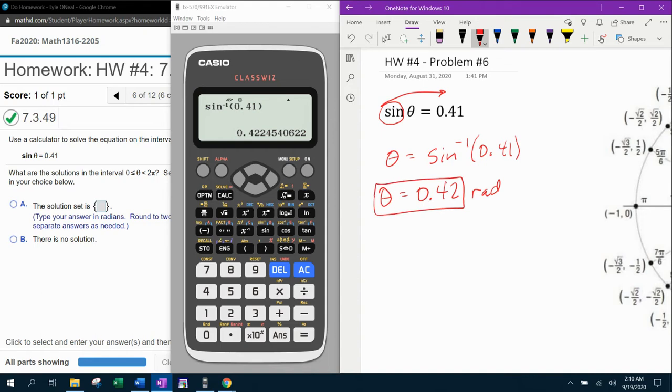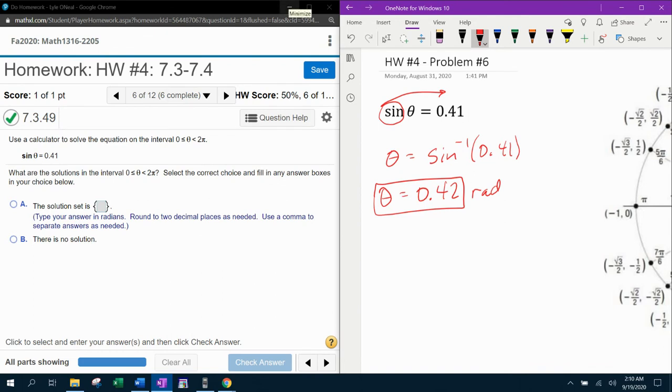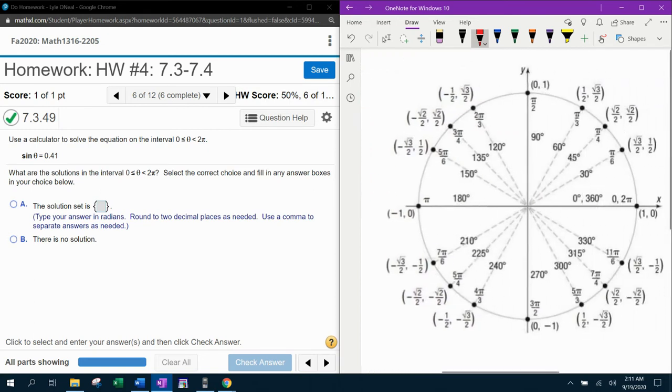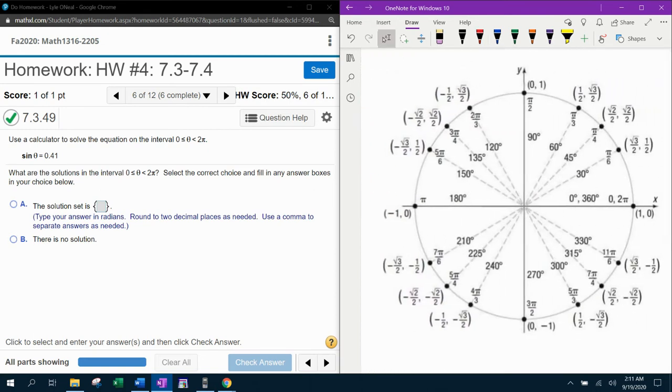Now the question is, is there another solution between zero and two pi that also satisfies this equation? Well, let's see. Now go back. Remember, I said that we're looking for y because we're doing sine theta. And notice that this answer is positive. So in the unit circle, where do we have positive y coordinates? Well, that's going to be number one and two, quadrant one and quadrant two have positive y coordinates.